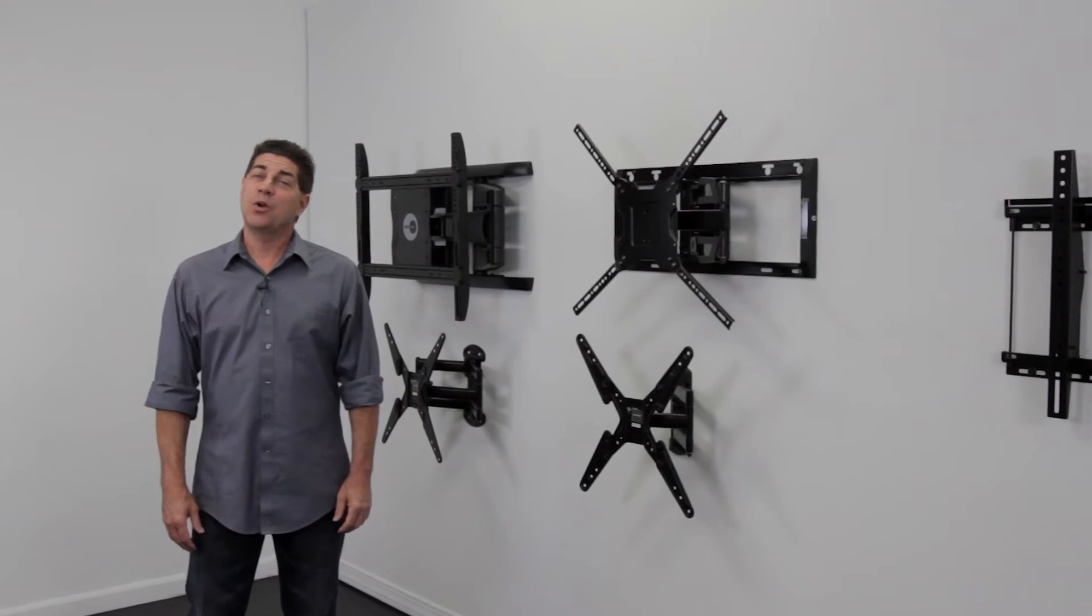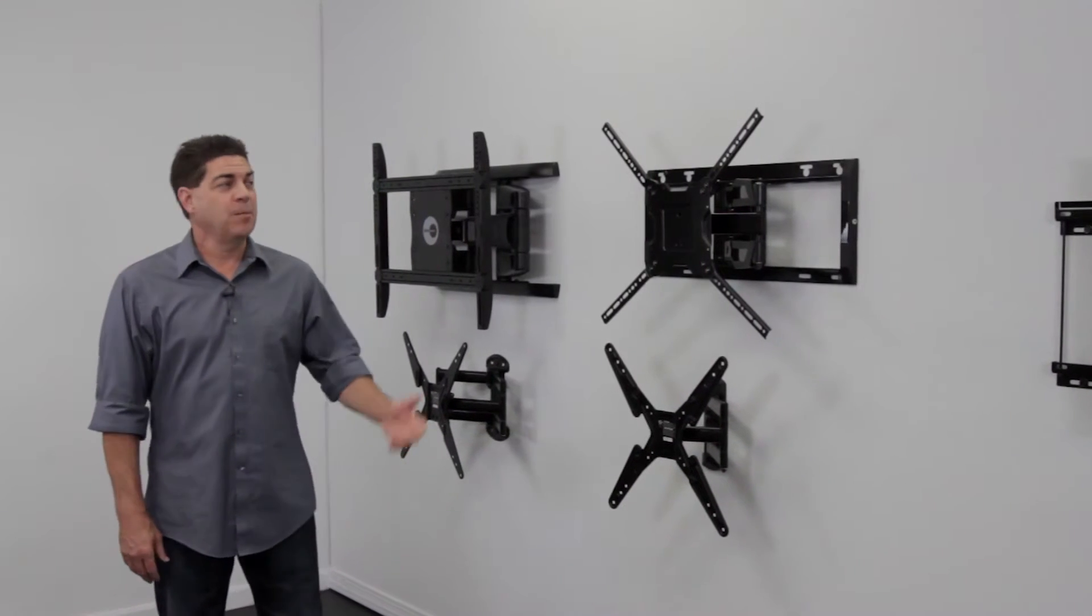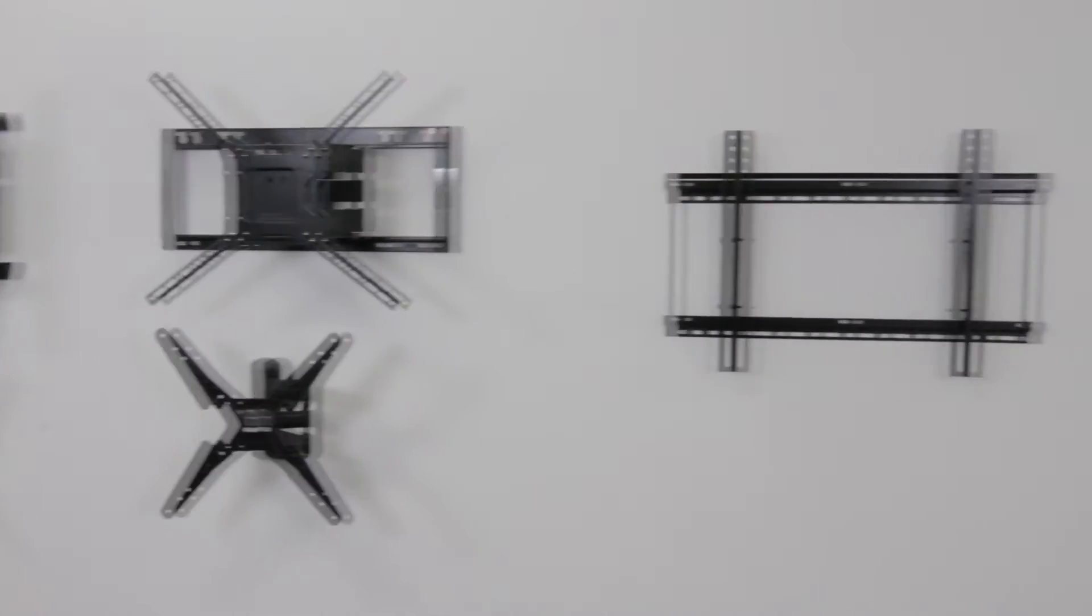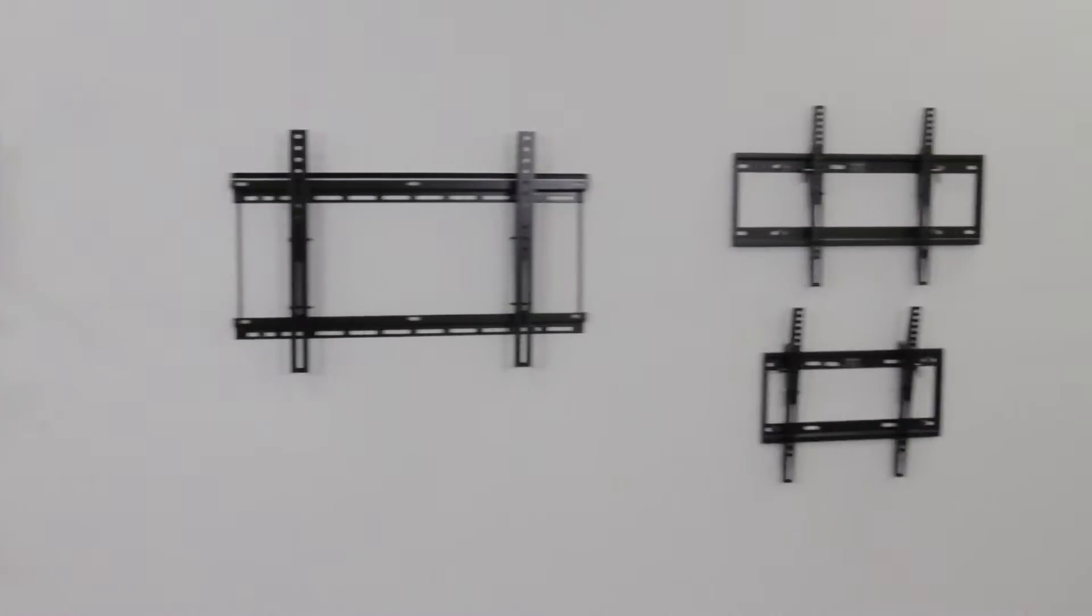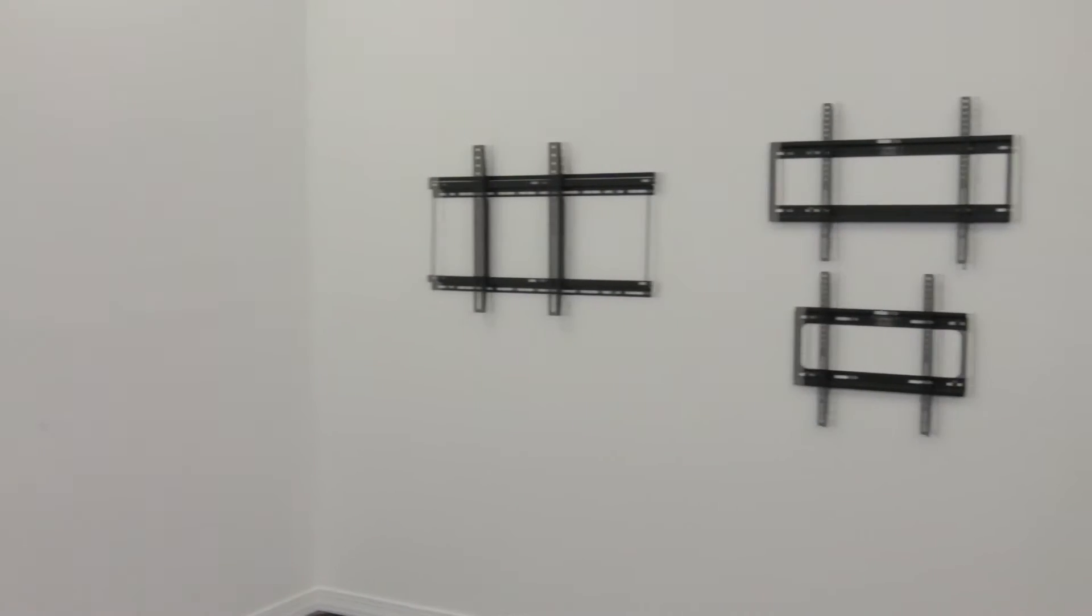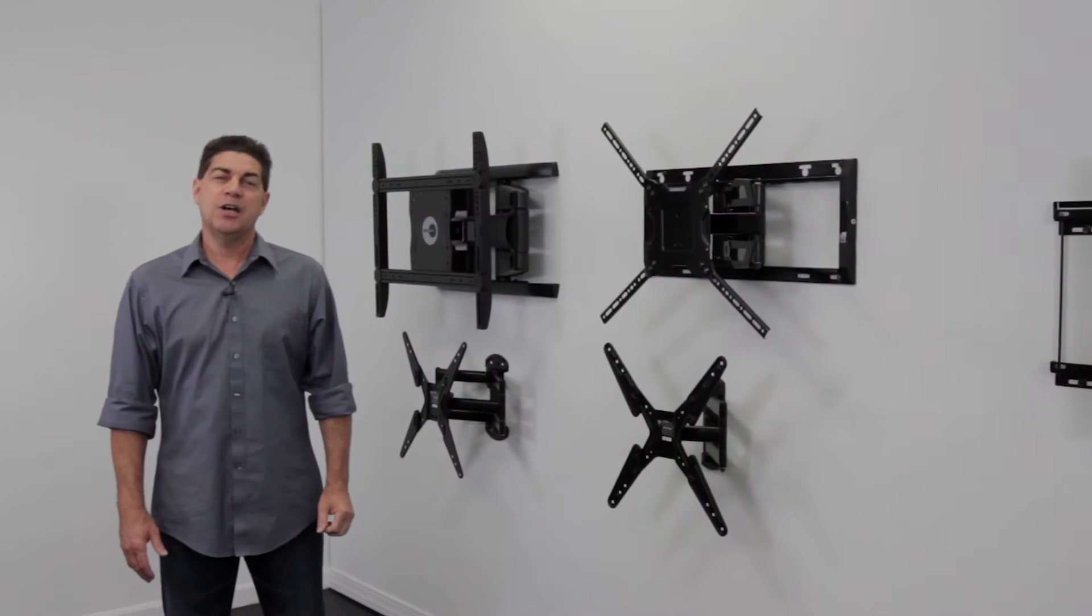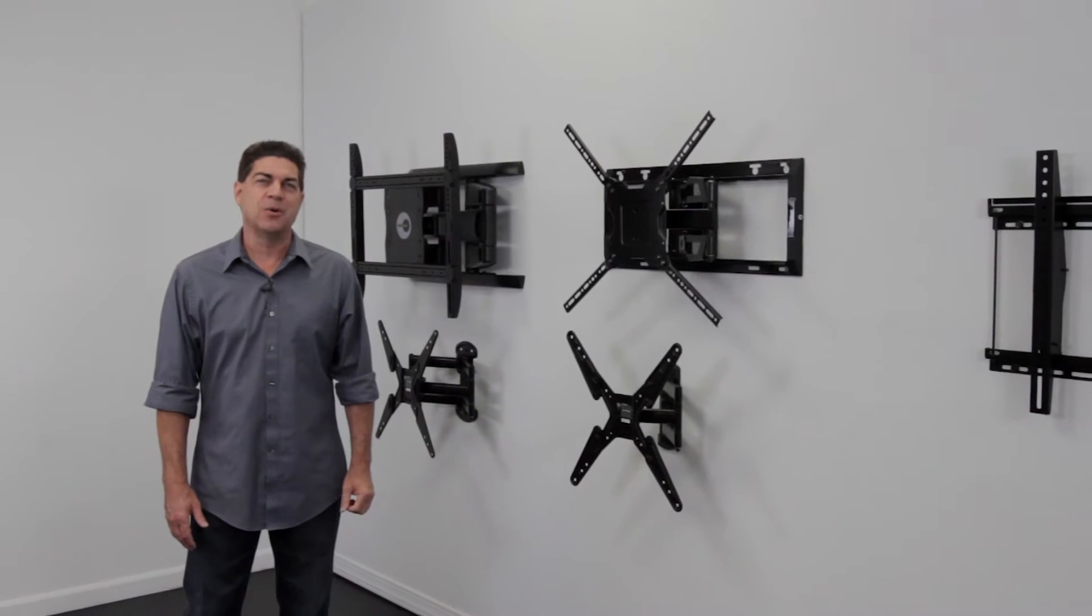The OmniMount CI or Custom Install line is made up of 10 wall-mounted products with weight capacities up to 250 pounds, tilt angles up to 15 degrees, and both 16 and 24 inch wall plates. All this and more make a professional line that fits the custom installer's needs right out of the box.